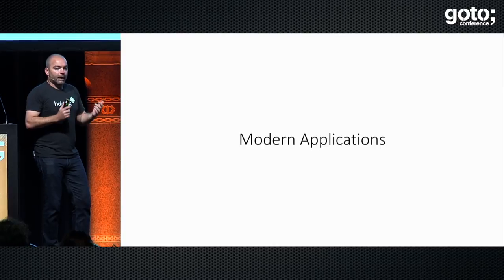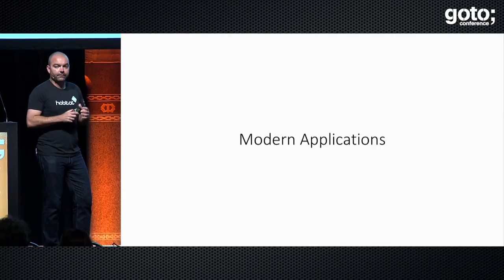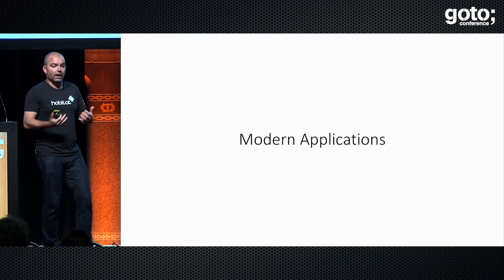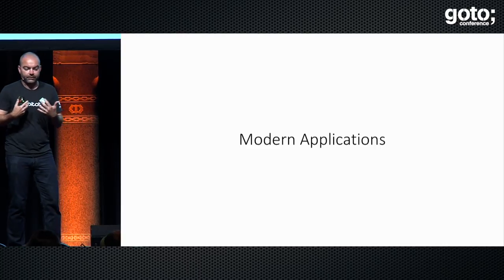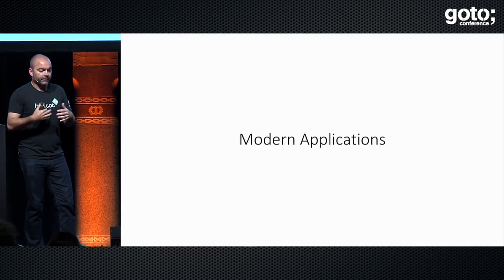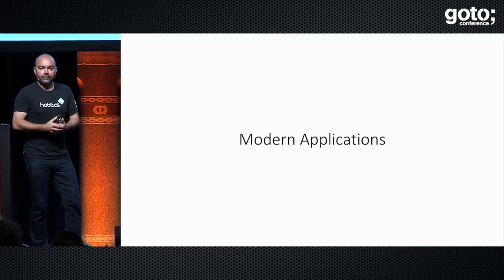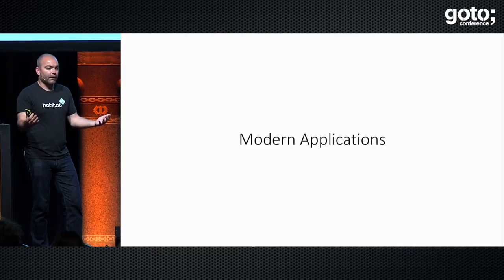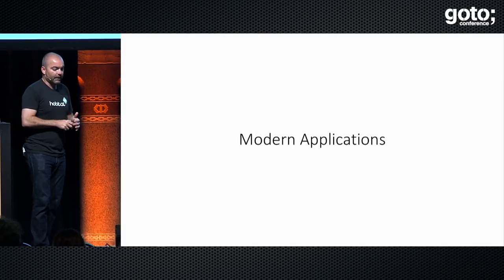Let's talk about what modern applications mean in the context of cloud native. This is going to be more operations-focused because by background I'm an operations and infrastructure person, thinking about how you actually run things at scale in production. Whereas a developer-centric crowd might be thinking, 'I just want to get my code and throw it over the wall to ops as quickly as I can.' So let's talk about modern applications and what you need to run them effectively.